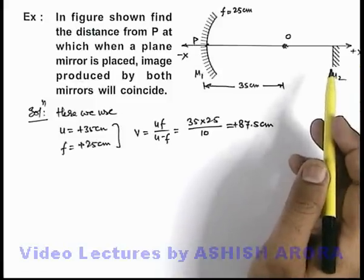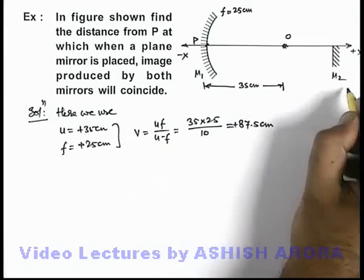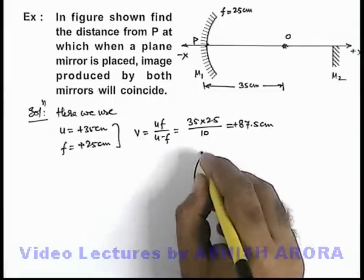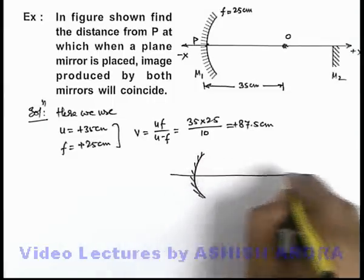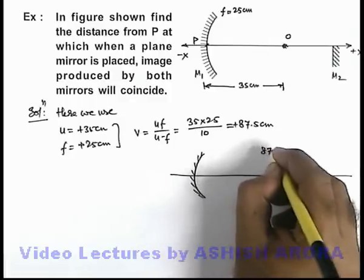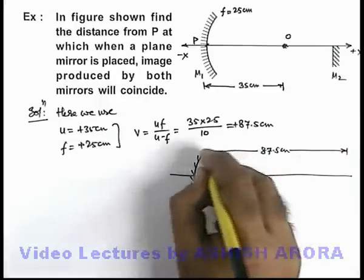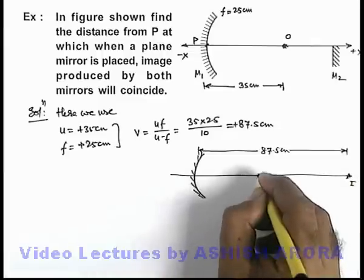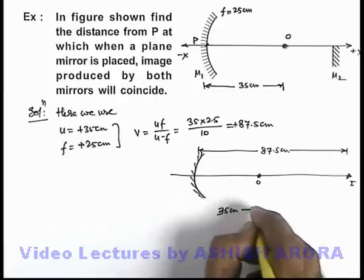And in this situation, from the object if we calculate the position of image, here I can redraw the picture to understand it with more clarity. Here this is the mirror, and at a distance of 87.5 centimeters from the mirror, the image is produced for an object which is located at a distance of 35 centimeters from the mirror.